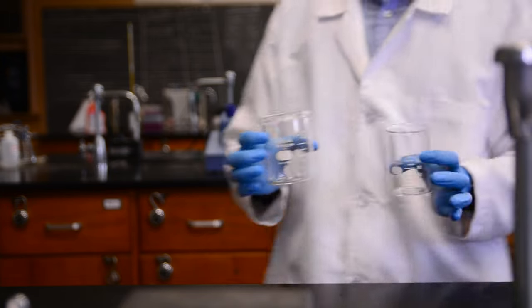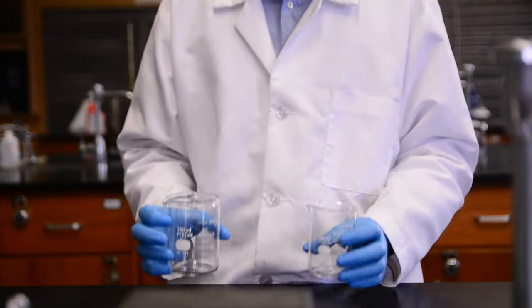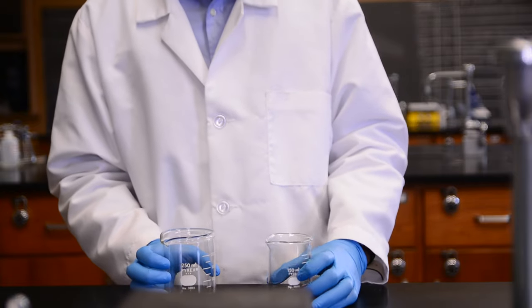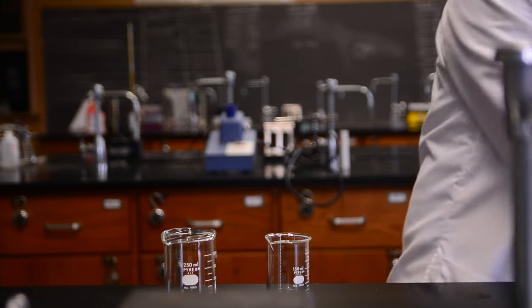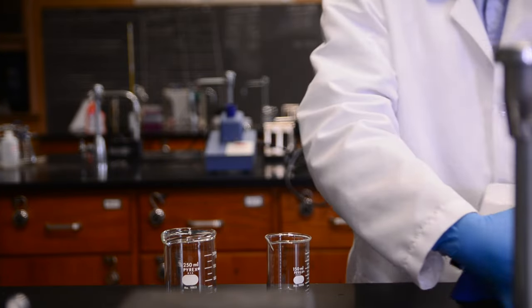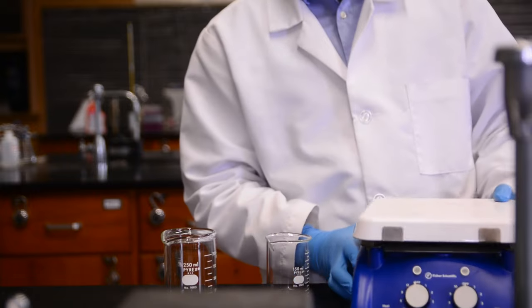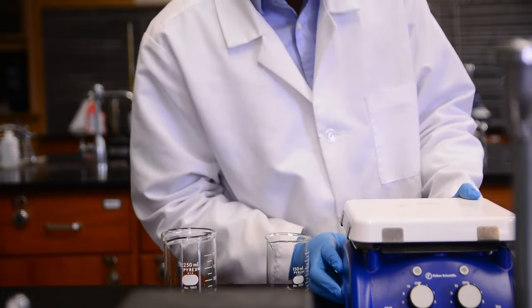To carry out a recrystallization, we will need a few materials. First, we will need two beakers. We will use a 250ml and a 150ml beaker in this experiment. Then we will need a hot plate with a magnetic stirrer, or a Bunsen burner if a hot plate is not available.